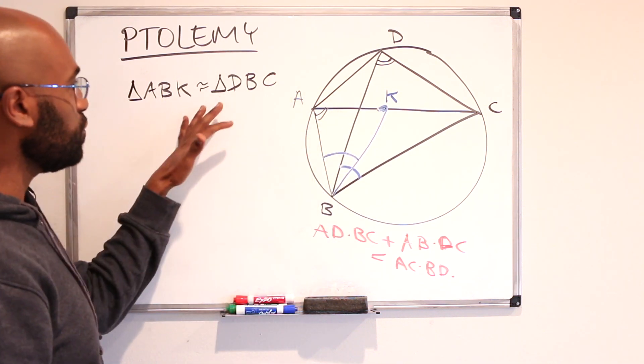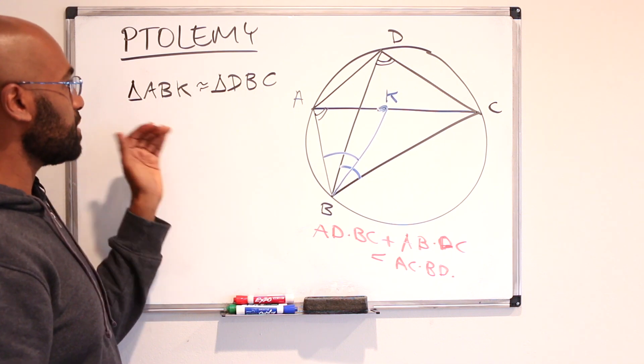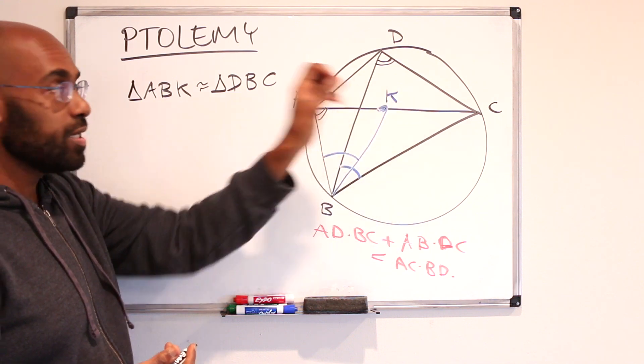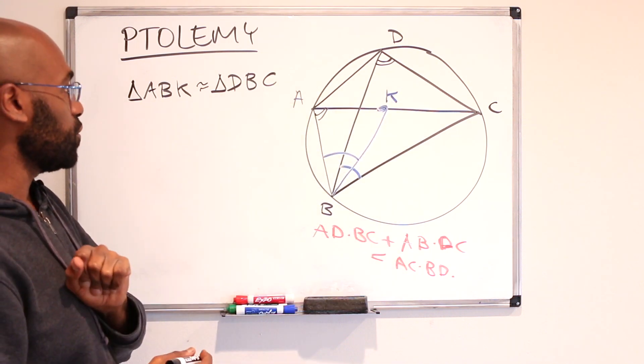So let's use this similarity to get some information about ratios that are close to the type of ratios that we want in our expression right over here for Ptolemy's theorem.